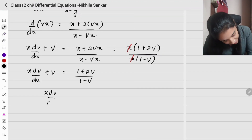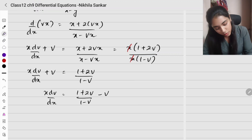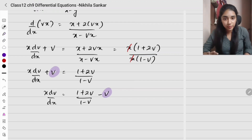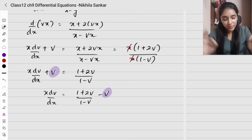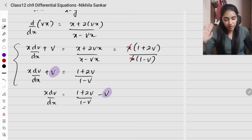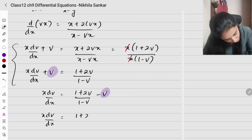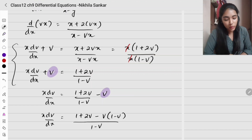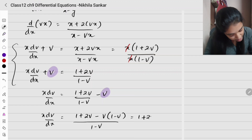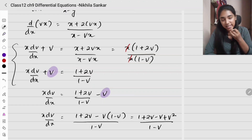Bringing v to the right side: x dv/dx = (1 + 2v)/(1 - v) - v. Taking the LCM: x dv/dx = [1 + 2v - v(1 - v)] / (1 - v). Expanding: 1 + 2v - v + v² all over (1 - v).